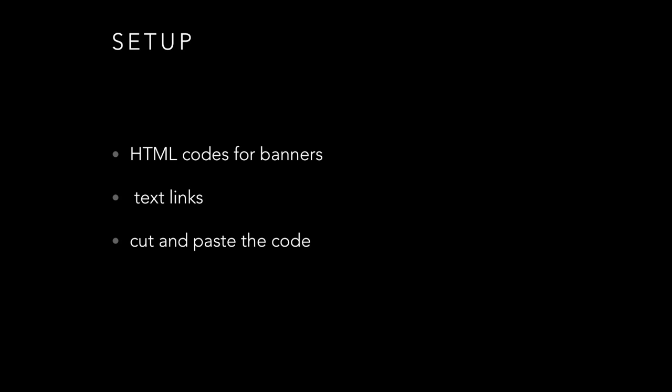Affiliate marketing is set up so you can join either through each program individually — like going to hootsuite.com and looking for their affiliate program — and get an HTML banner code with your affiliate link so every time somebody clicks through you get a commission. Or you can go to a program like CJ.com and join the Hootsuite affiliate program through there, getting paid through CJ instead of Hootsuite directly. You'll get HTML code for banners and text links that you cut and paste into your website, and if people click through and convert, you get paid.